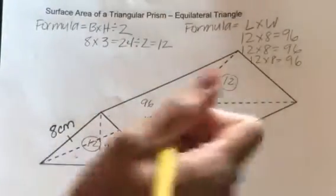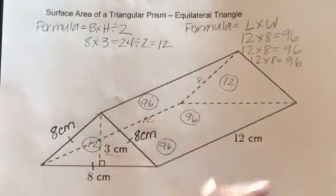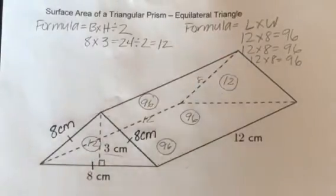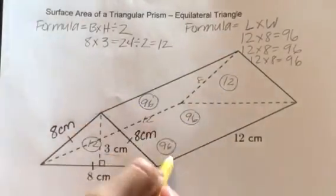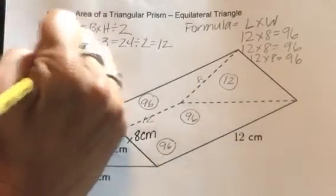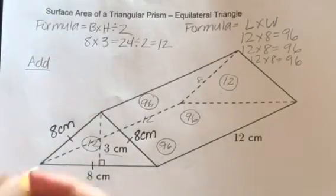Okay, so now, as you can see, I've solved for 5 faces. We've got 12 and 12. That's 1, 2. And then the whole body is all 96. So 3, 4, and 5. So the last step to find the total surface area is now to add all 5 faces together.